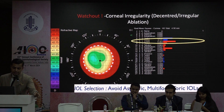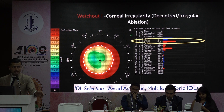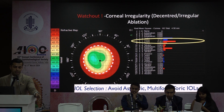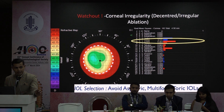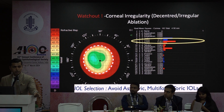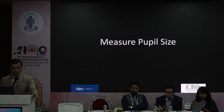The second most important diagnostic is Placido topography over Scheimflug, because Placido picks up corneal irregularities better. We must ensure the cornea is regular, particularly when implanting ATIOLs like toric or EDOF lenses, because an irregular cornea leads to a very poor post-operative outcome.